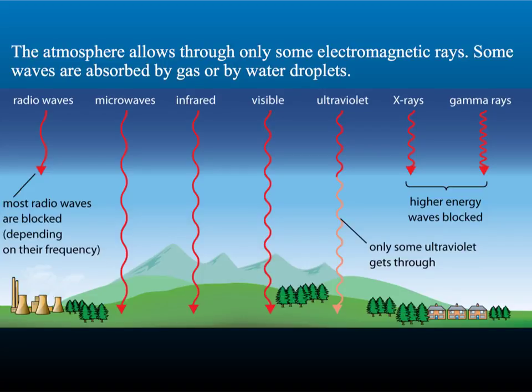We have already learnt how parts of the atmosphere protect us from high energy ultraviolet radiation from the Sun. This thin layer of air surrounding our planet is essential for life. It acts like a shield, not only protecting us from the ultraviolet, but also stopping higher energy parts of the electromagnetic spectrum such as x-rays and gamma rays from reaching the surface.